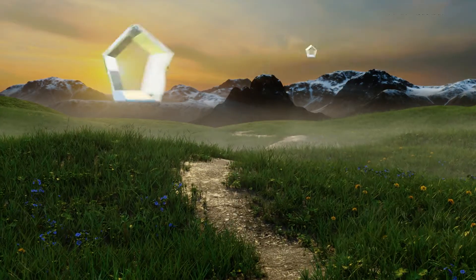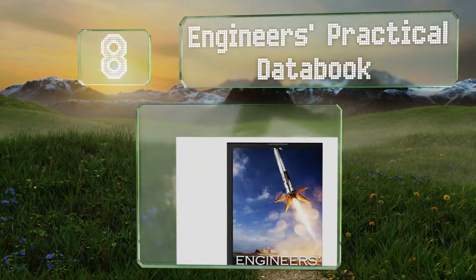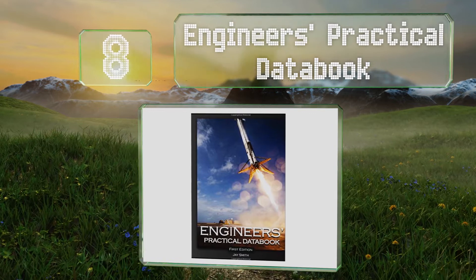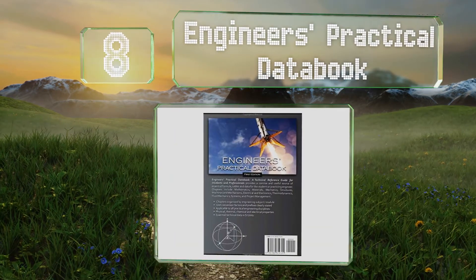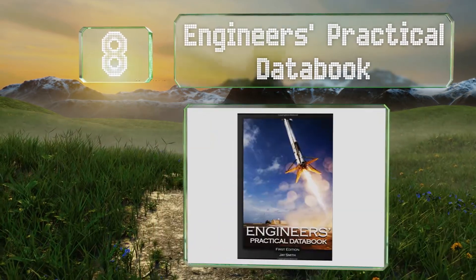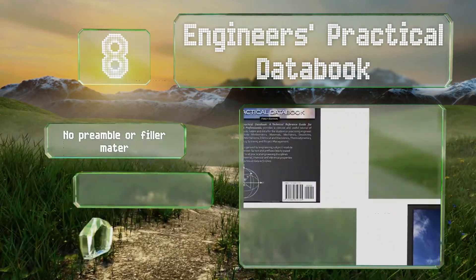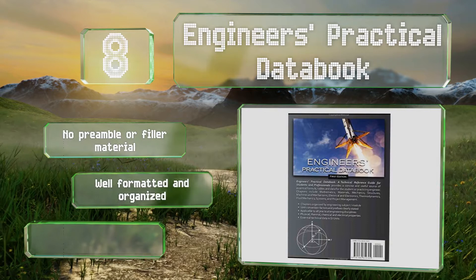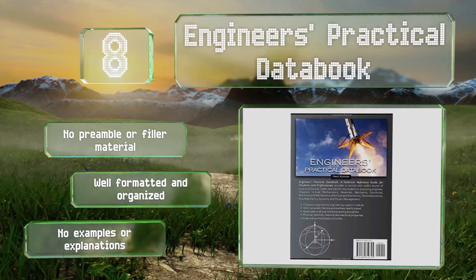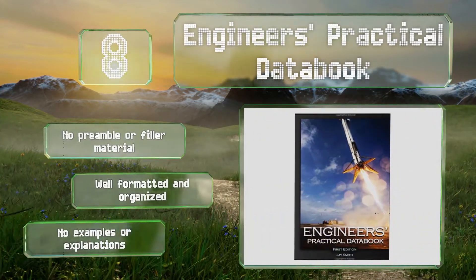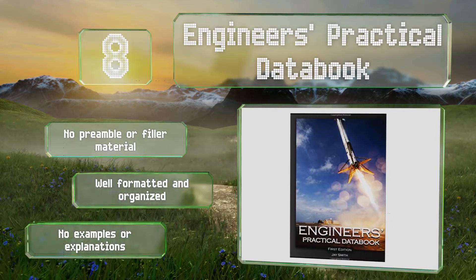Coming in at number 8 on our list. Whether you're a student or a professional, you'll be expected to remember a ton of formulas and other information, which is where the Engineer's Practical Data Book comes in. This reference covers topics useful to those in mechanical, civil, and aerospace sectors too. It contains no preamble or filler material and is well formatted and organized.